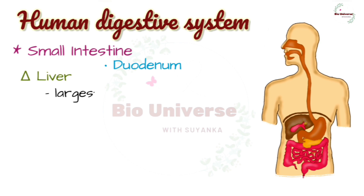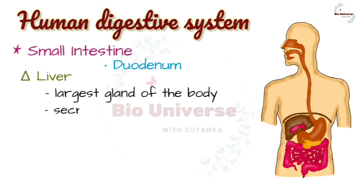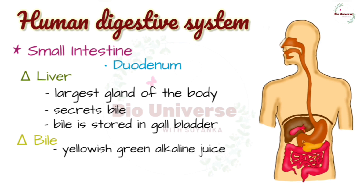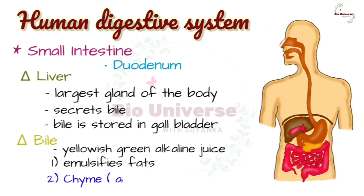The liver is the largest gland of the body and it secretes bile, which helps in digestion. Bile juice produced by the liver is stored in the gallbladder. Bile is a yellowish-green alkaline juice that is poured into the duodenum through the common bile duct. There are two main functions of bile: it emulsifies fats, and it neutralizes the acidic chyme coming from the stomach, making it alkaline — at which point it is called chyle.